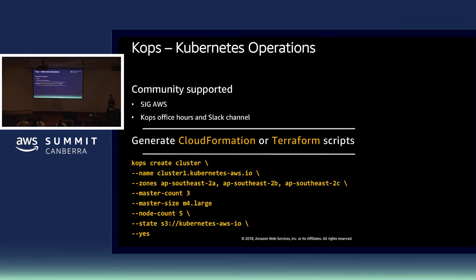KOPS is probably one of the more popular ones when we talk to customers deploying Kubernetes clusters on top of AWS. As I mentioned, it is community supported, driven by the special interest group for AWS, and if you're interested in learning more, I recommend you pop along to either the community office hours that happen once a week, or the Slack channel. You can get a lot of information around that.